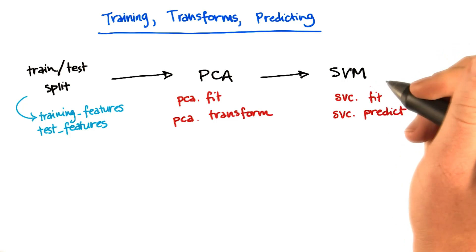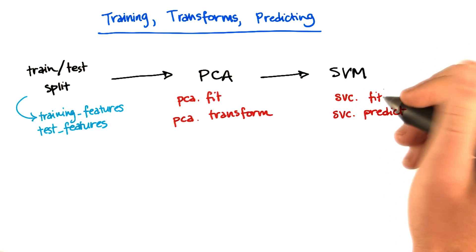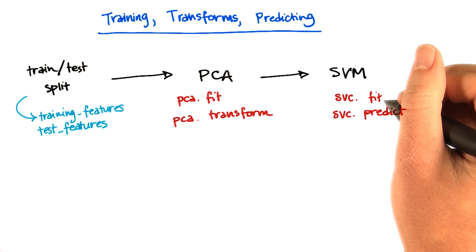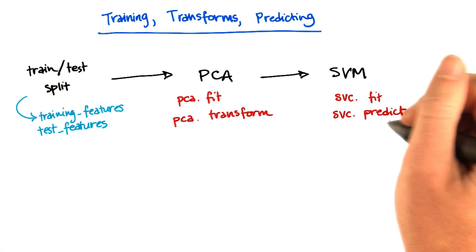Likewise, a support vector machine or support vector classifier can be fit on some of the data and then be used to make predictions on a different set of data.